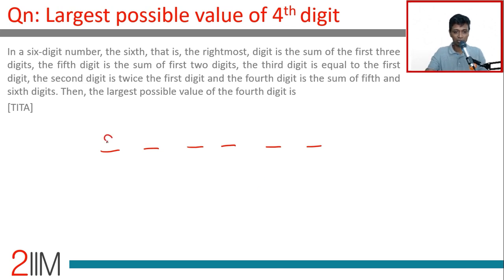I'm going to call the first digit 'a'. The second digit is twice the first digit, 2a. The fourth digit is the sum of the fifth and sixth digits.